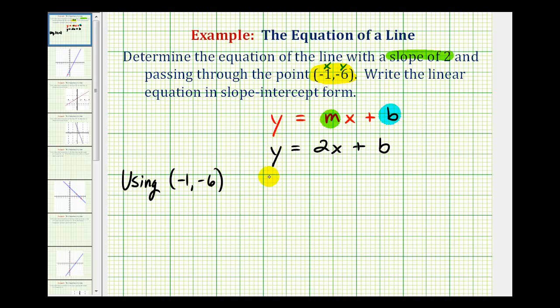So we'd have negative six, the y-coordinate, is equal to two times the x-coordinate of negative one plus b. And again, notice now we only have one unknown, so we can solve for b. We would have negative six equals negative two plus b.